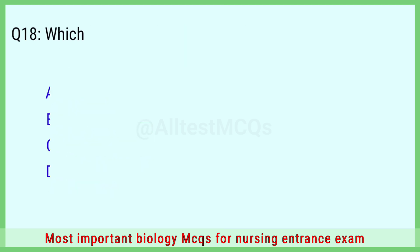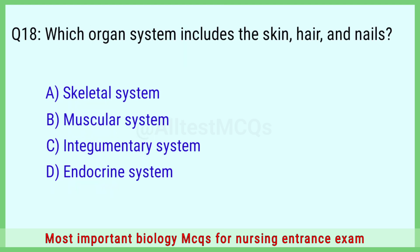Question number 18: Which organ system includes the skin, hair, and nails? The right answer is option C: integumentary system.